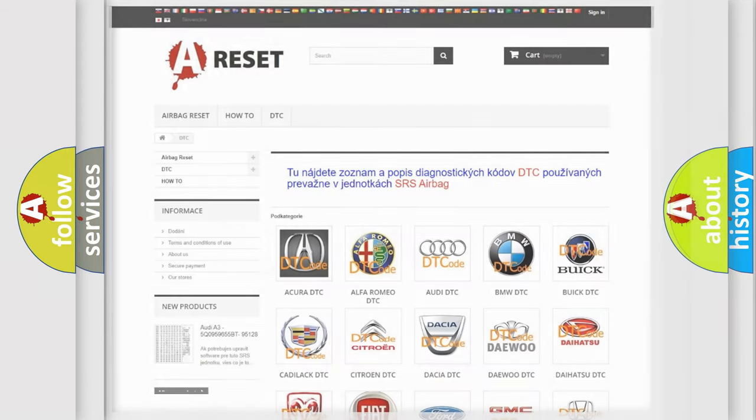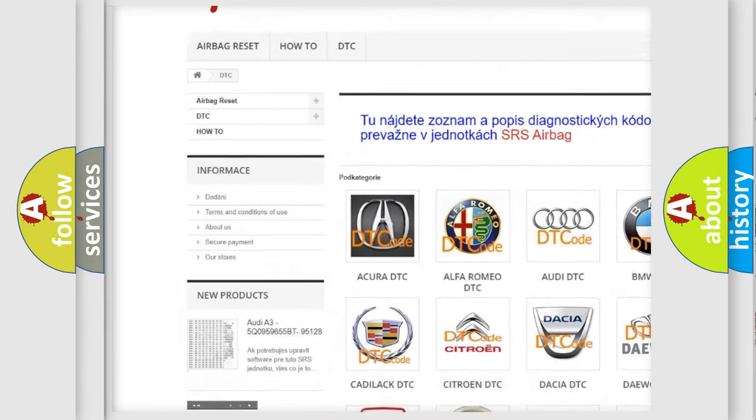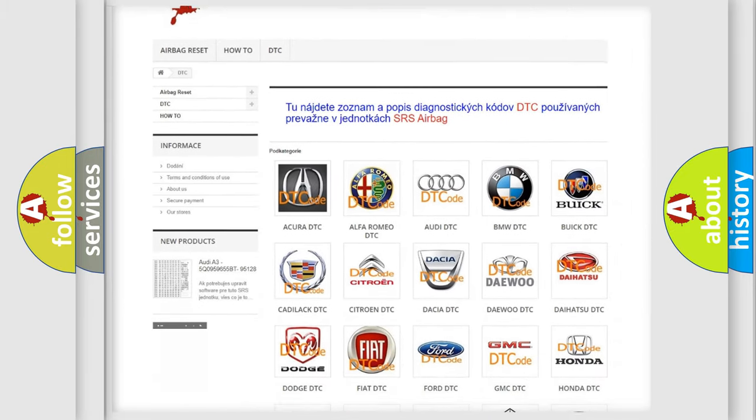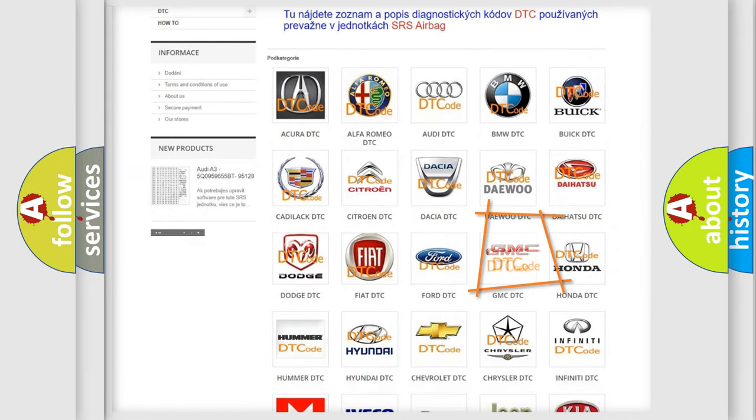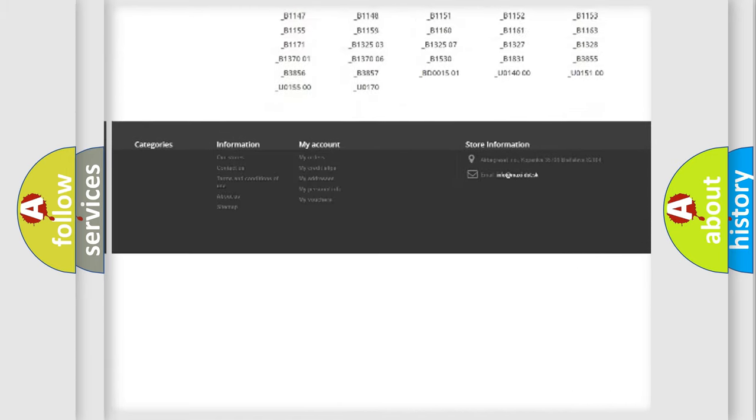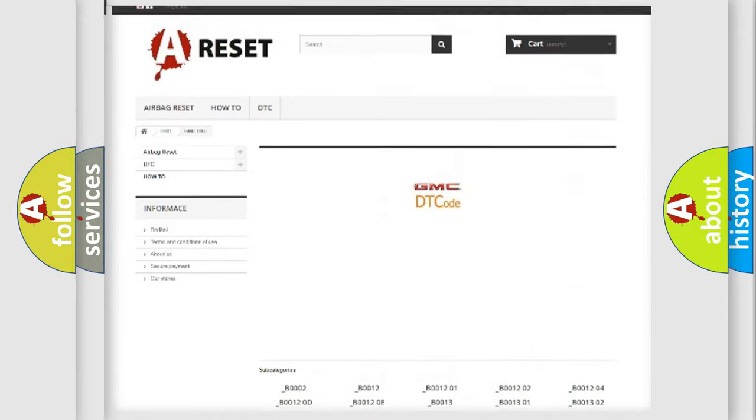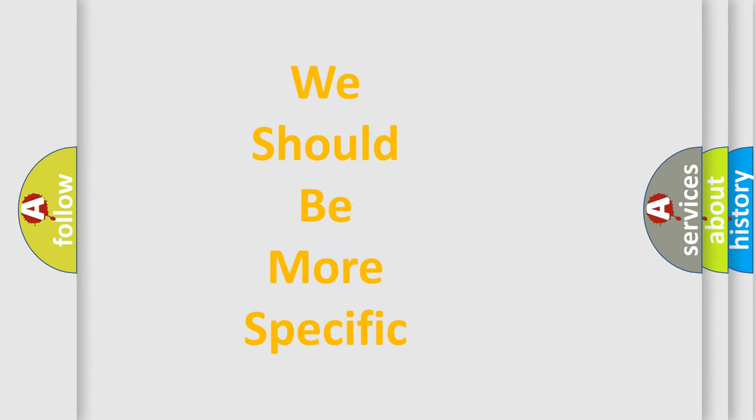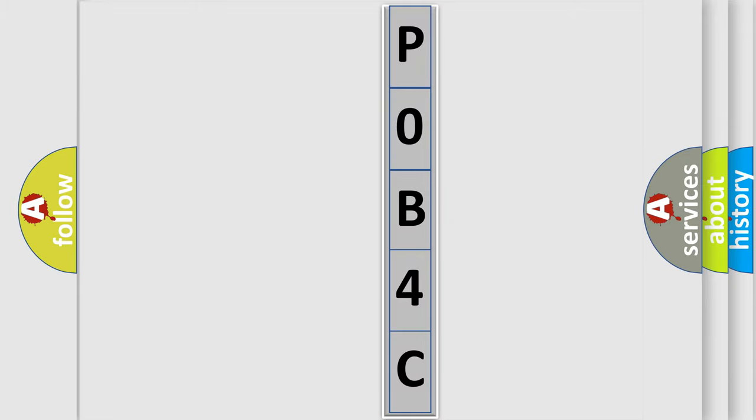Our website airbagreset.sk produces useful videos for you. You do not have to go through the OBD2 protocol anymore to know how to troubleshoot any car breakdown. You will find all the diagnostic codes that can be diagnosed in GMC vehicles, also many other useful things. The following demonstration will help you look into the world of software for car control units.